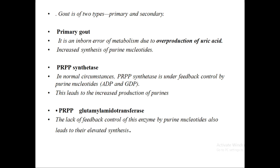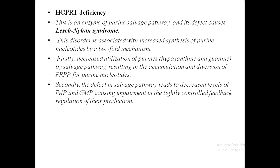Another cause is PRPP glutamyl amidotransferase, which is also subject to feedback control. Due to dysregulation of this enzyme, purine nucleotide synthesis increases. Additionally, HGPRT deficiency — an enzyme in the purine salvage pathway — leads to increased synthesis of purine nucleotides.